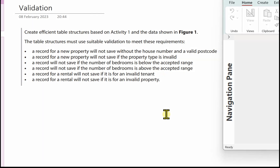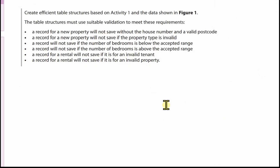This is the third video in the letting agency database series. In the previous video we created the table structures. This one is looking at the validation. In the activity we were asked to create table structures based on activity 1 and the data. The table structures must be suitable for validation to meet a number of requirements.